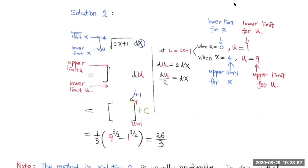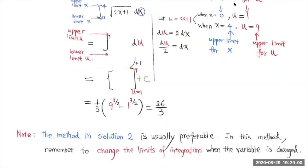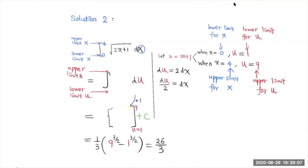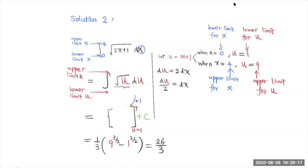The preferred way is to change the limit of integration when we do the u-substitution. So how do we do that? First, we also let u equal 2x plus 1. So the square root of 2x plus 1 becomes the square root of u right here.